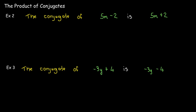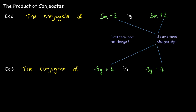The conjugate of negative 3y plus 4 is negative 3y minus 4. So we notice that the first term, when we look at conjugates, doesn't change. It was 5m, and then in its conjugate, it's still 5m. In the second example, the first term was negative 3y. When we looked at its conjugate, it's also negative 3y.